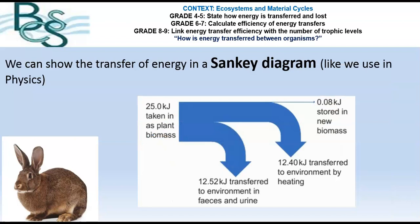We can show the energy that's being transferred in a Sankey diagram, exactly as you might have seen in physics. So here for the rabbit, we've put some numbers on it. We've got 25 kilojoules of energy taken in as plant biomass. We've got 0.08 kilojoules of energy stored in new biomass — so that's the rabbit itself. But we've lost 12.52 kilojoules into the environment as feces and urine, and we've also lost 12.4 kilojoules which has been transferred into the environment by heating and keeping that rabbit nice and warm.